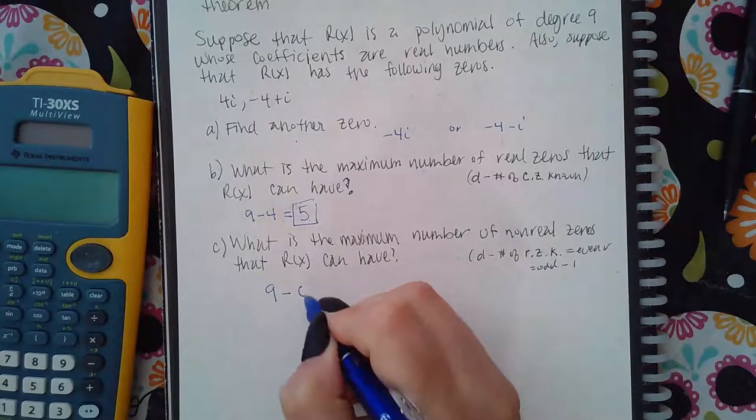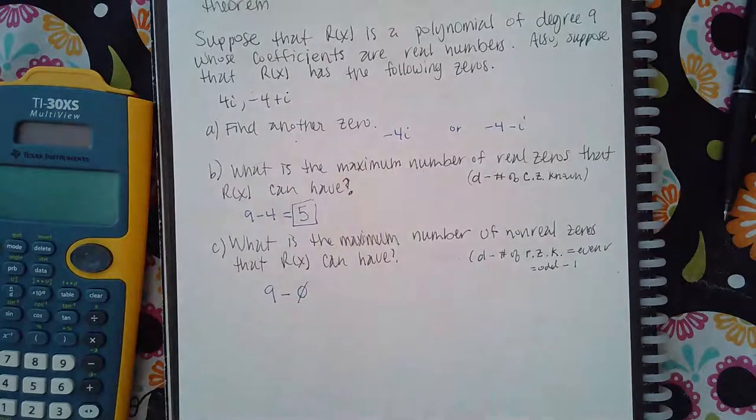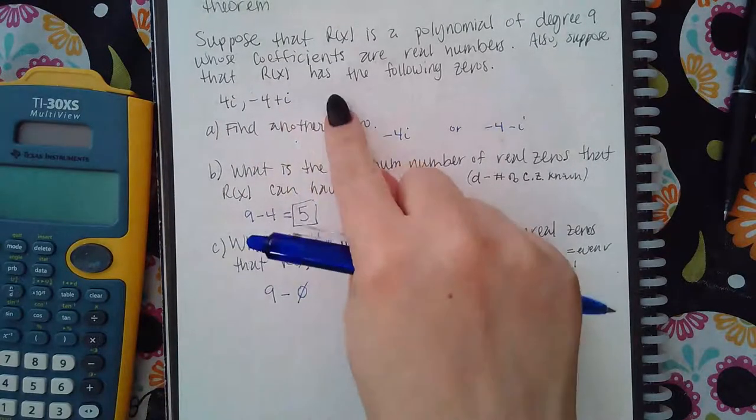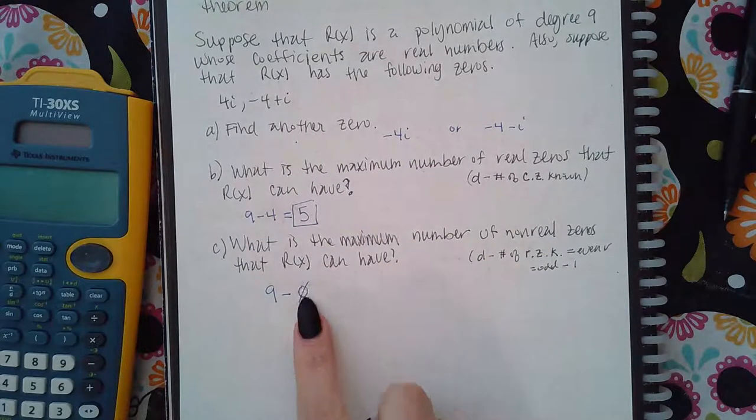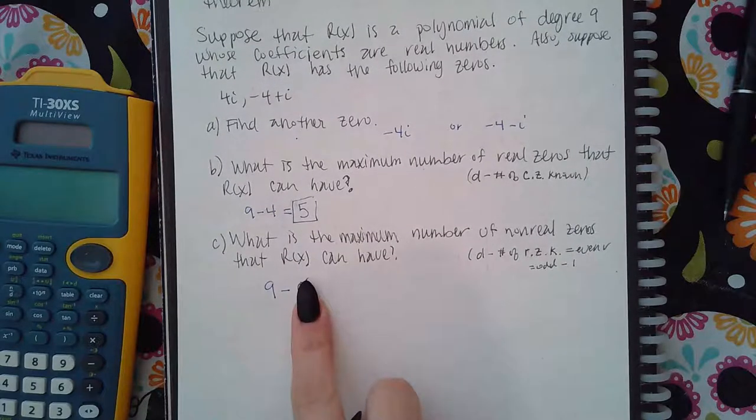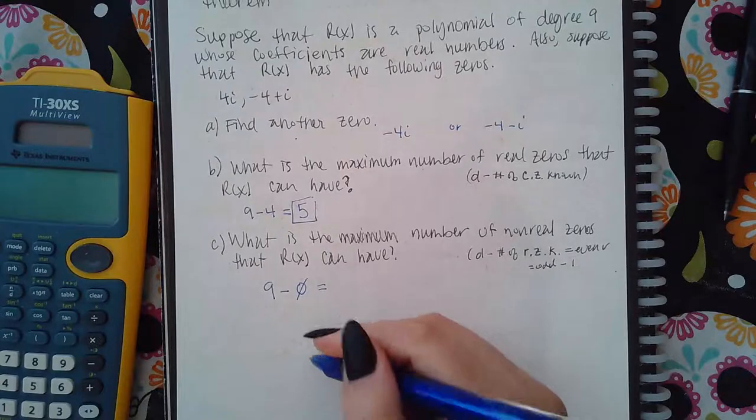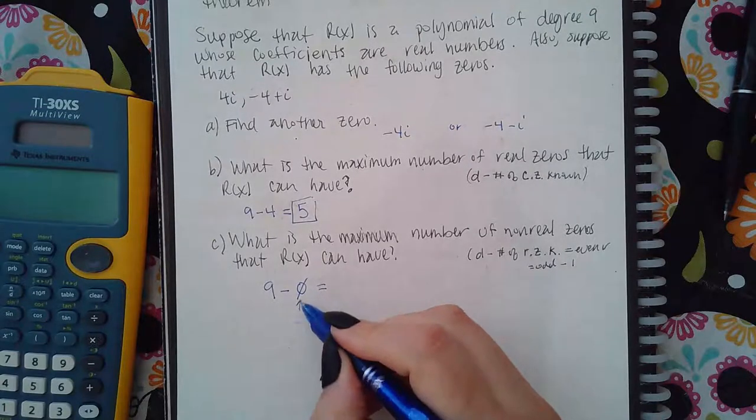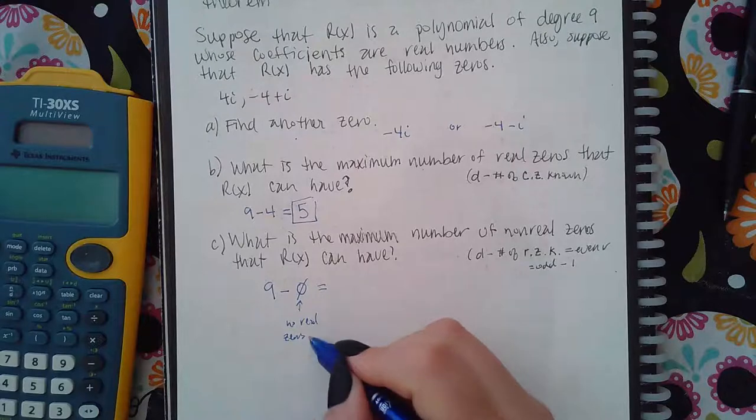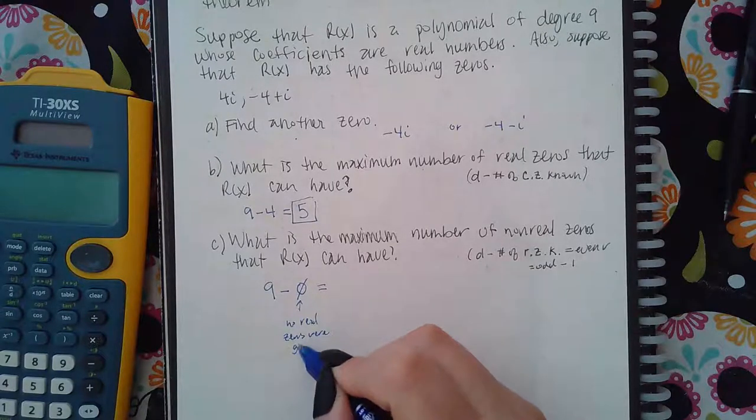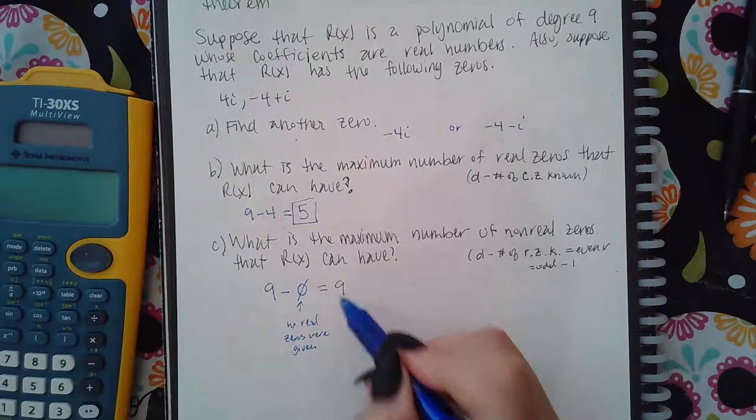I don't know that any of them are real because I wasn't given any real ones here. If I was given another one, like 5, then I would know that I had one real one and I would subtract that. But since I wasn't given any real zeros, it's zero. And 9 minus 0 is 9.